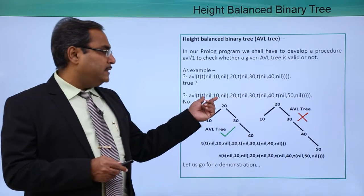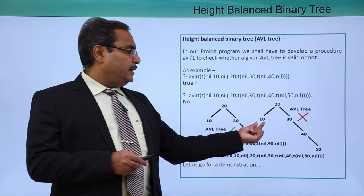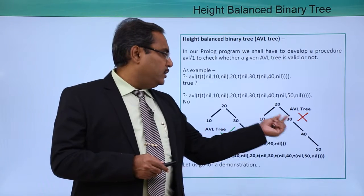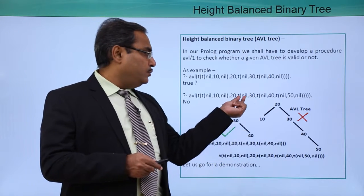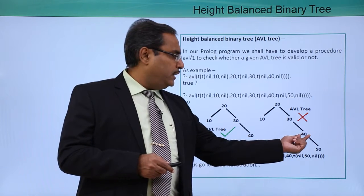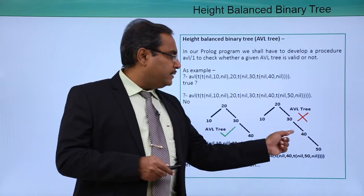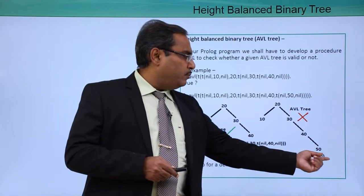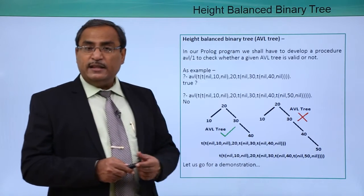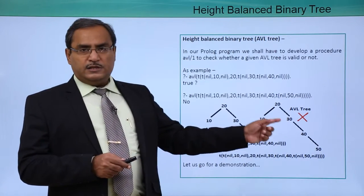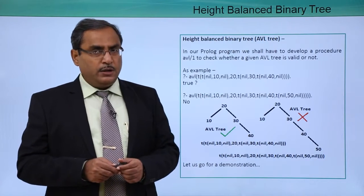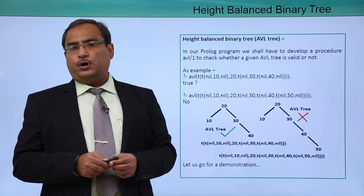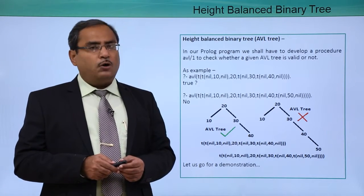That invalid tree is represented as follows: 20 is the root, 10 is the left child written as nil 10 nil, and 30 is the right child with no left subtree, so nil is there. Its right subtree has 40 as root, with no left subtree, and 50 has no left or right subtree, so nil 50 nil. This tree structure is passed as an argument. Let us go for a demonstration where we shall write the respective Prolog program, run it, and show the outputs.